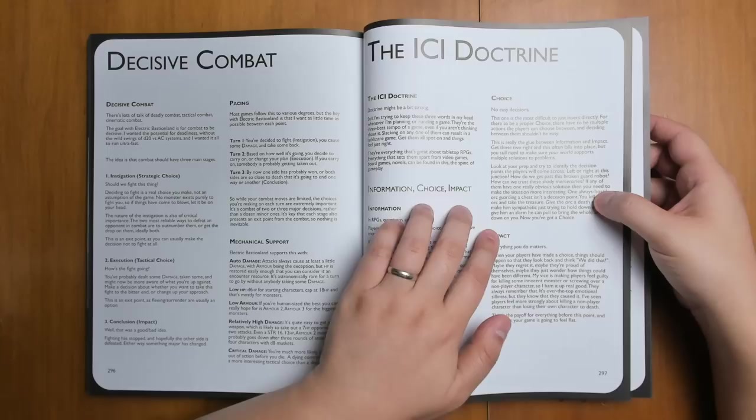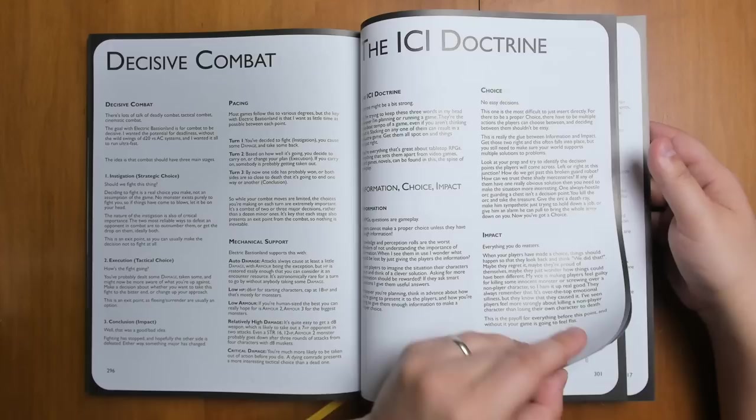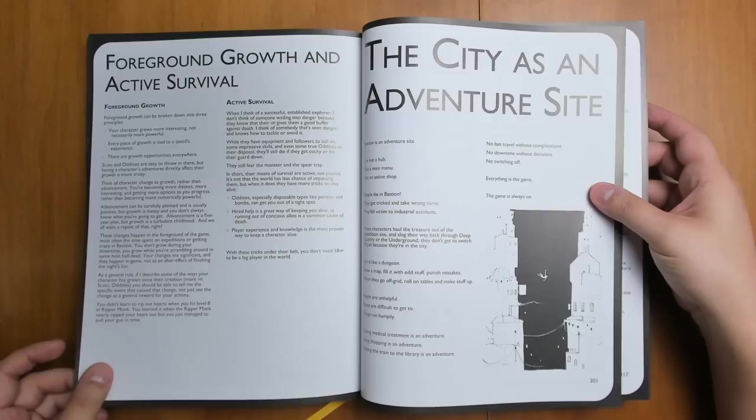And that's his doctrine here. Information, choice, and impact. Give players tons of information. Make sure you're focusing on the choices that they make. And then emphasize the impact of those choices. More advice on big impact. Foreground growth and active survival. How to run a city as an adventure.